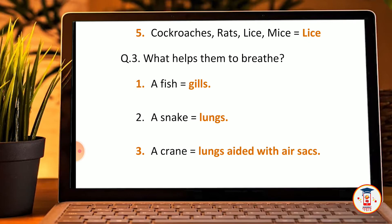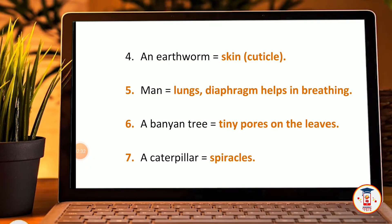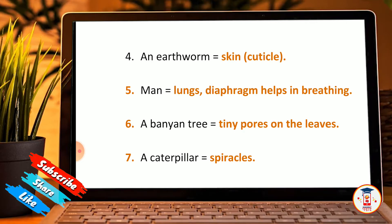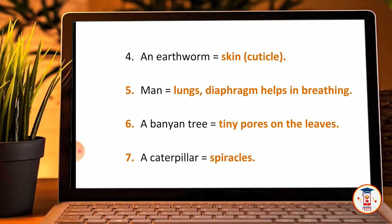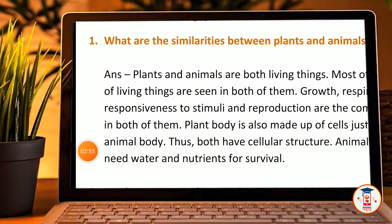Next question: what helps them to breathe? Fish breathe with gills. Snakes breathe with lungs. Cranes breathe with lungs and air sacs. Man breathes with lungs. Skin also helps some organisms to breathe. The diaphragm helps in breathing. A banana tree breathes through tiny pores on the leaves. A caterpillar breathes through spiracles.